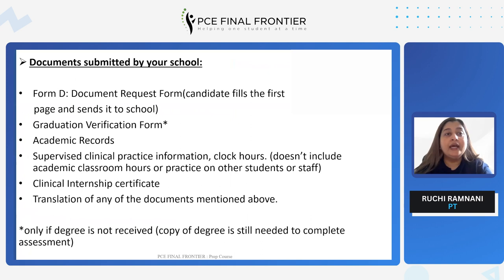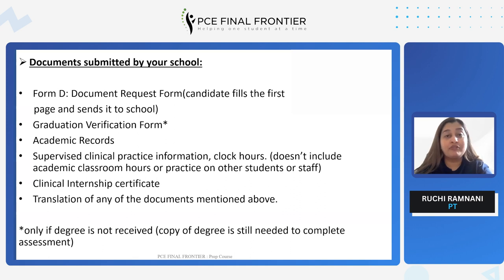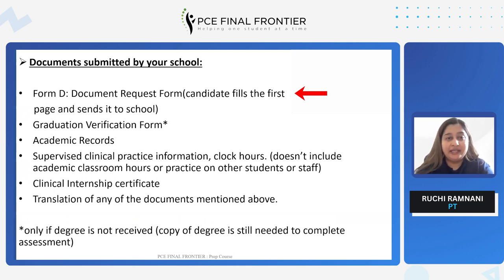Moving forward, the documents submitted by your school — that's Form D. Form C is not a requirement anymore, so you do not send Form C and you wouldn't find it on CAPR's website. Form D is the document request form. The candidate fills out their initial personal details and would send it to their school for all the other procedures and steps.